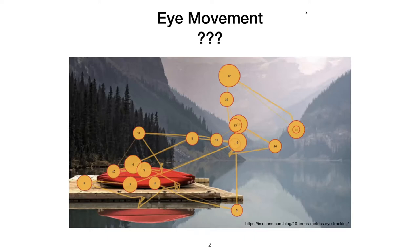Students answer: partly because we want to sample different parts of the environment with high-acuity vision, so we move our high-acuity vision scope around. We don't have a uniform retina — we have high acuity in one region and low acuity elsewhere, which means we have to move our eyes if we want to do something like read.